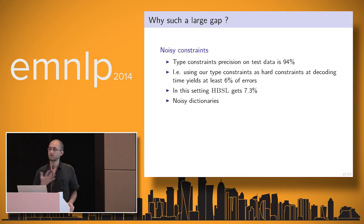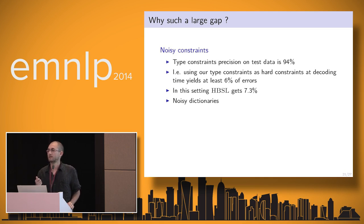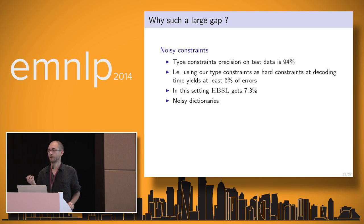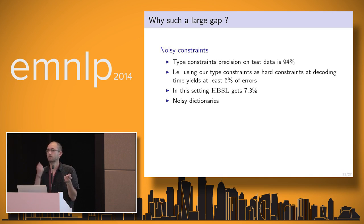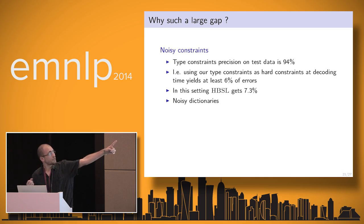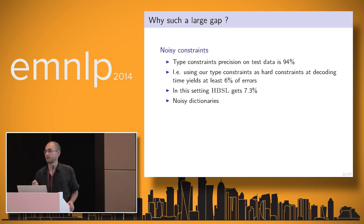This method still is not as good as supervised learning. However, we think there are explanations for why this gap is still so large. One first reason is that the type constraints are not very accurate. On the test set, our type constraints only have a precision of 94%, meaning we cannot build a system using them that achieves better than 6% error rate. In fact, using supervised learning with the constraints, we get a 7.3% error rate.